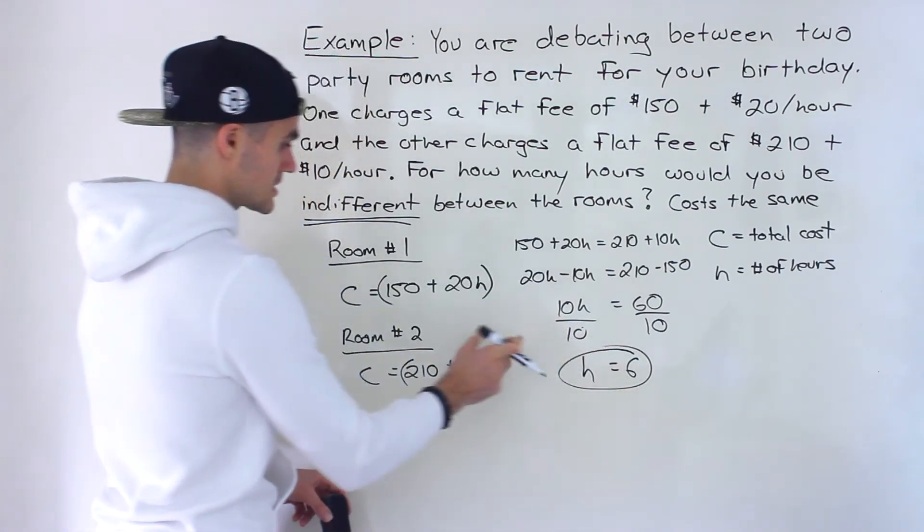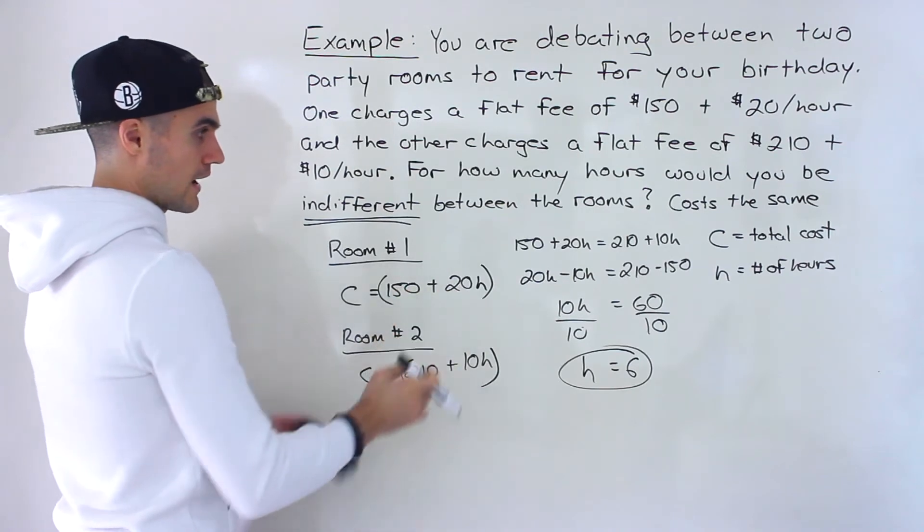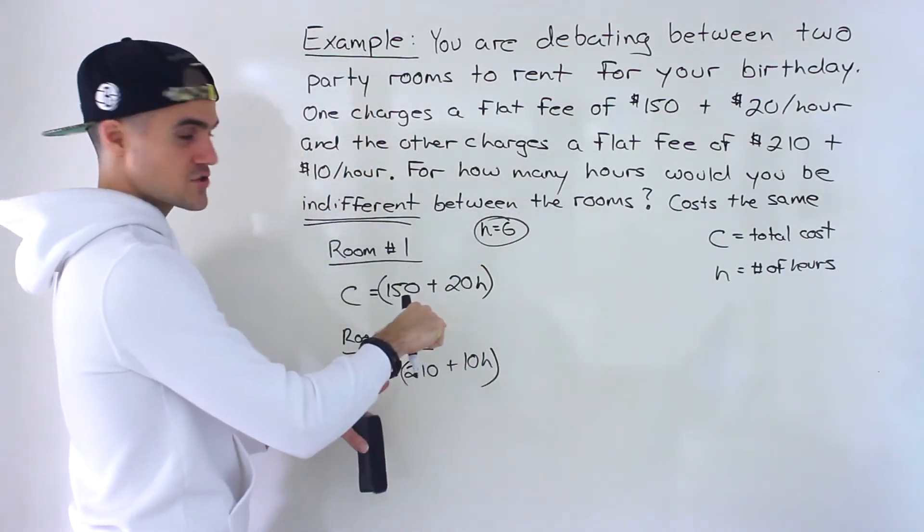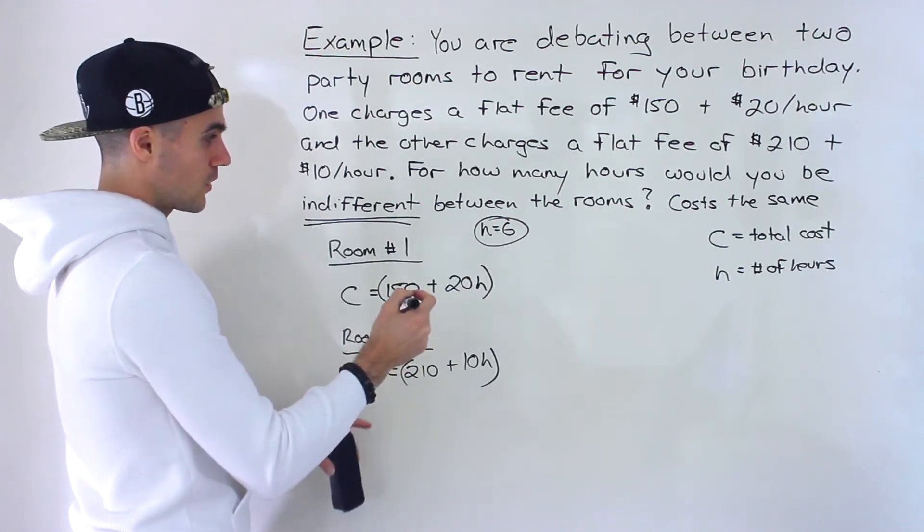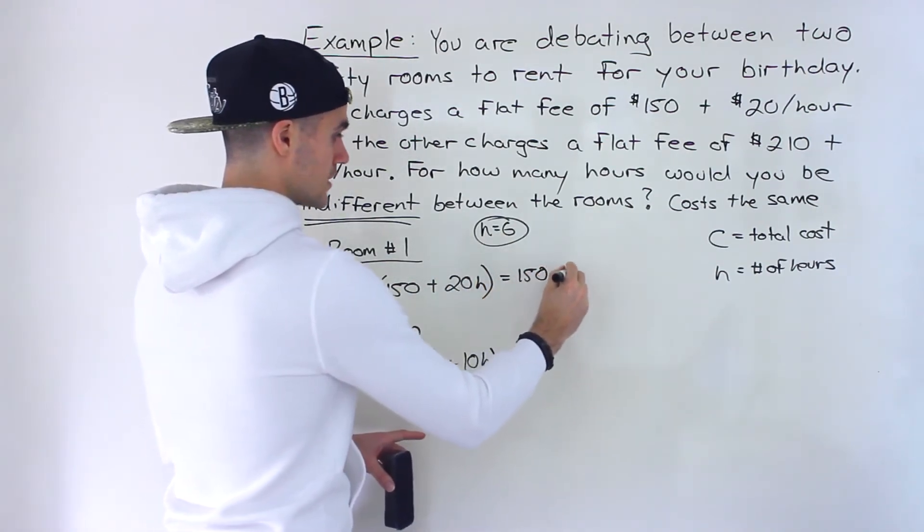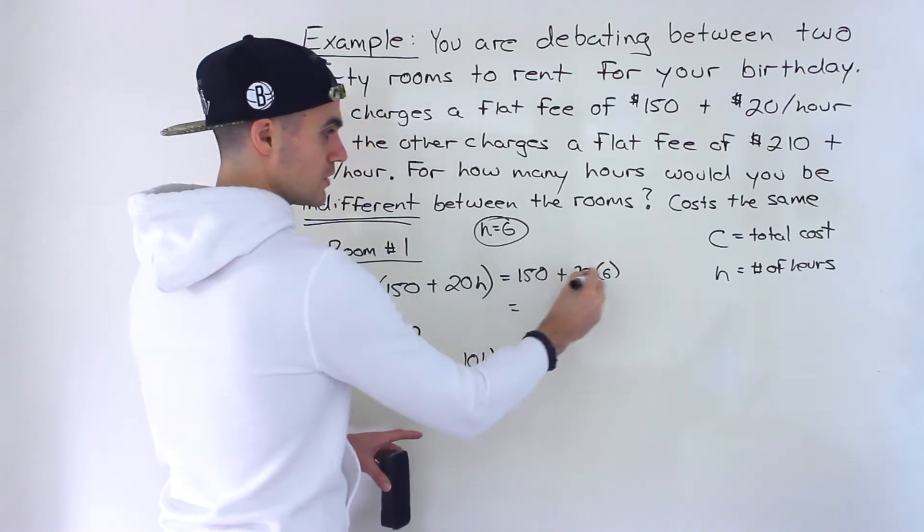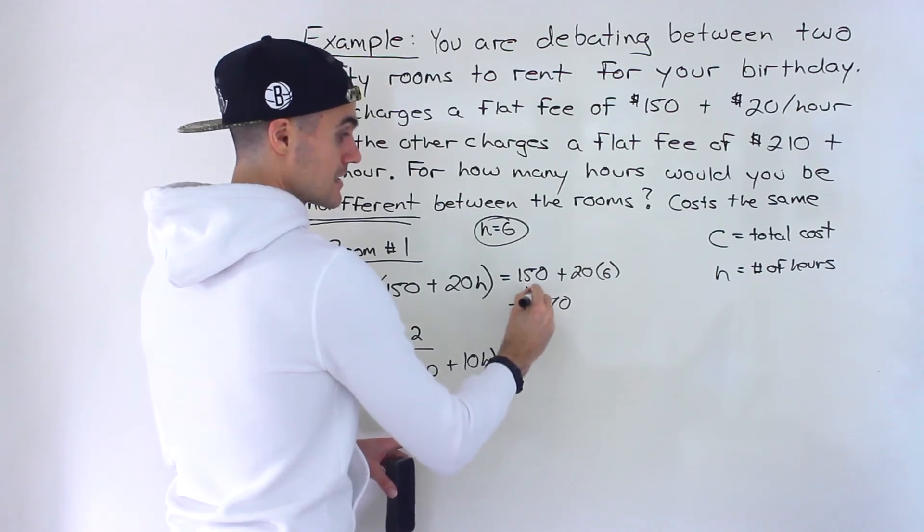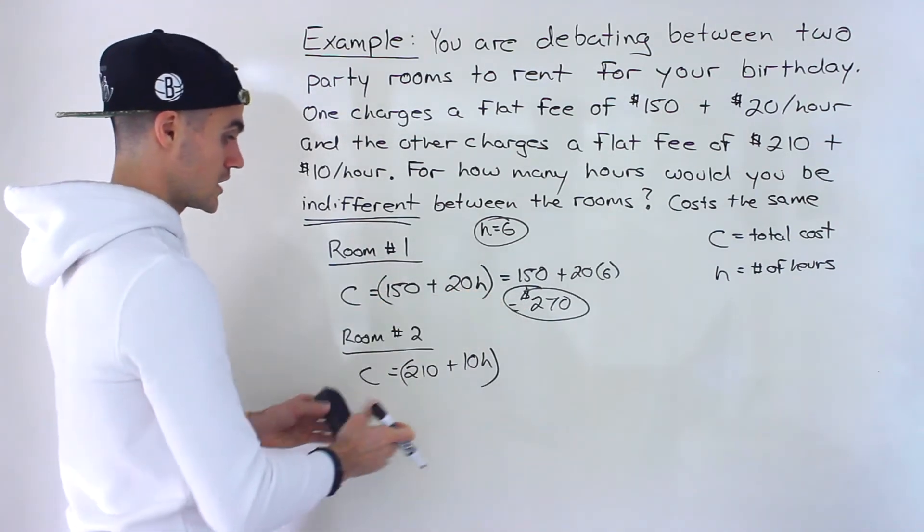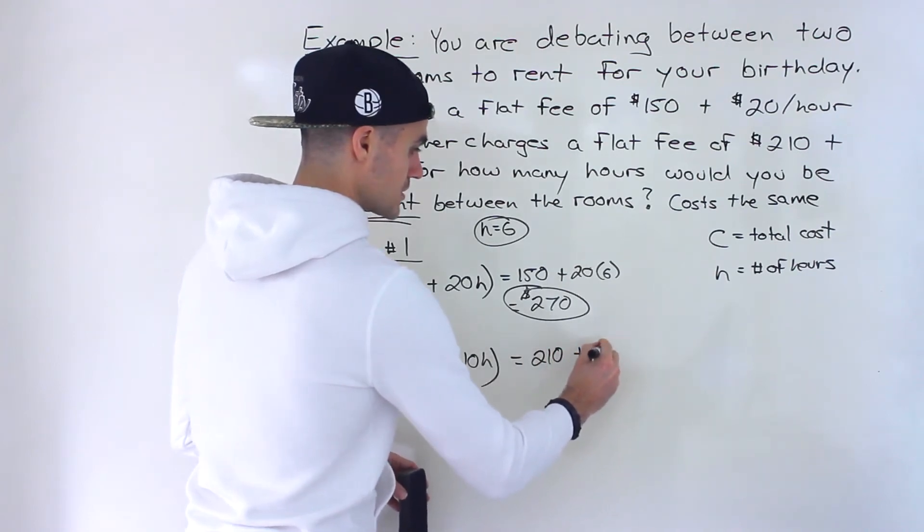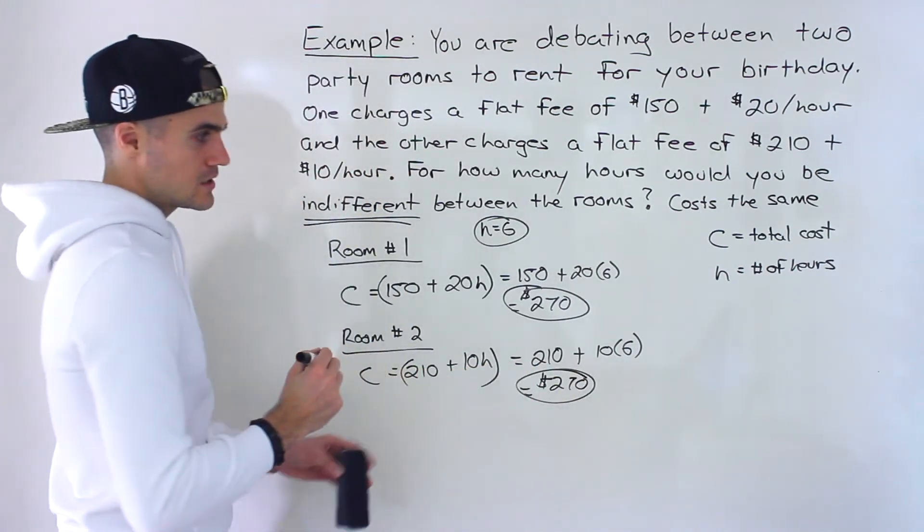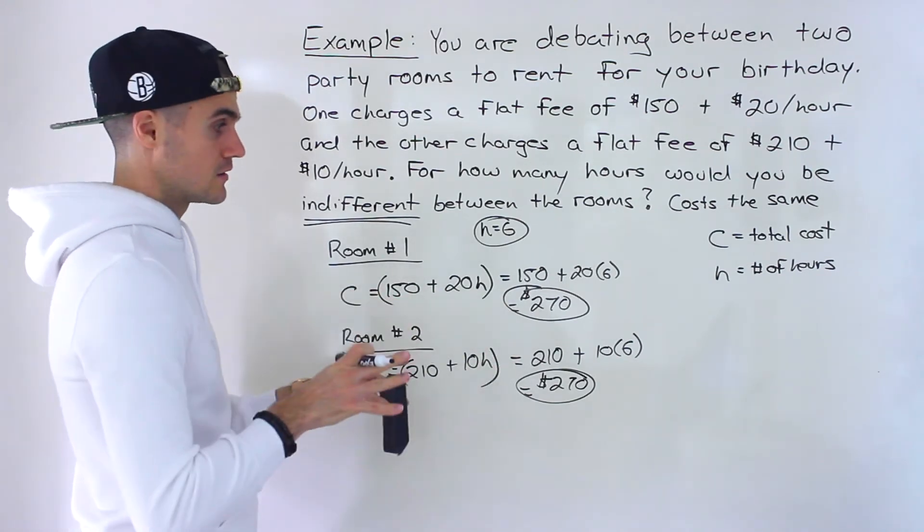Then you could confirm it. You could take 6 and plug it in to both of these. Let me write the solution here. I'm actually going to show you also graphically how it looks like. So with 6 hours, we'll have 150 plus 20 times 6, which would be 150 plus 120, which would be 270. They may ask what's the cost of each room when both costs are the same. So that would be the answer, 270. And then over here, notice we get 270 as well, because we'll have 210 plus 10 times 6, which would be 210 plus 60, which would give us 270 as well. So at 6 hours, both costs are the same. You're indifferent to both rooms.